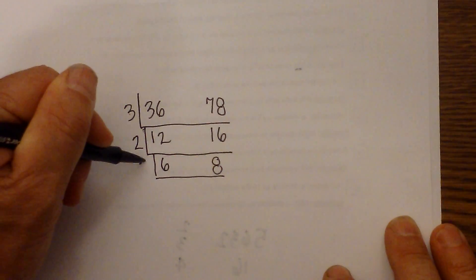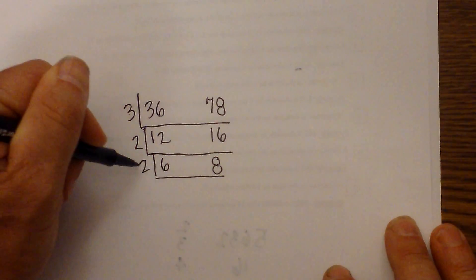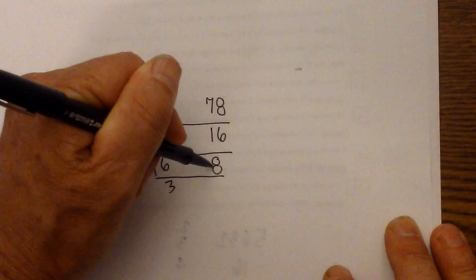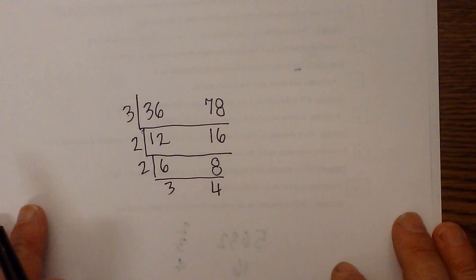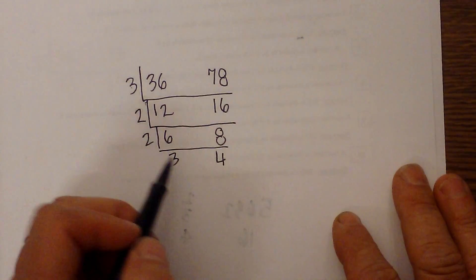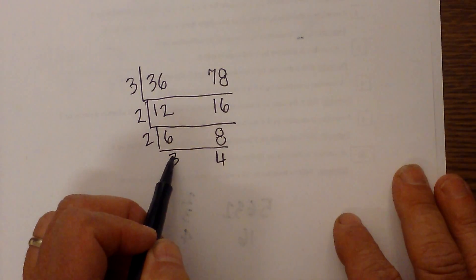Draw a line underneath. I can use 2 again. 2 will go into 6 3, 2 will go into 8 4. I'm now down to two numbers that I know we cannot find a number that will divide into both 3 and 4.